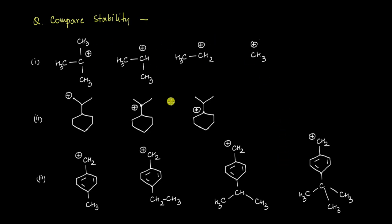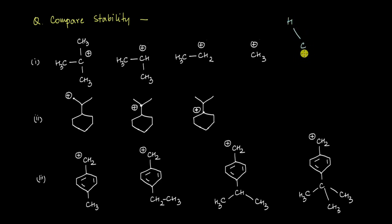We have different sets of cations and we need to figure out their relative stabilities. Starting with this set, we have a carbocation with methyl groups attached to it. For hyperconjugation to take place, we need an sp3 carbon atom that has at least one hydrogen — at least one hydrogen atom that is directly connected at the alpha position of the carbocation.